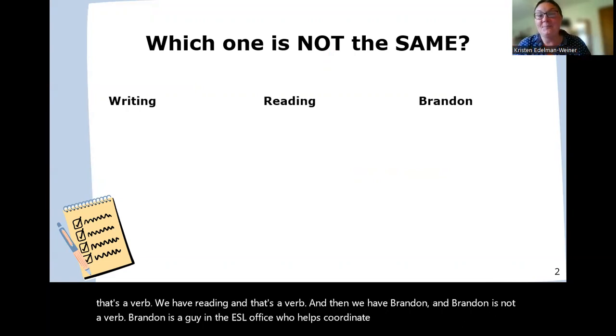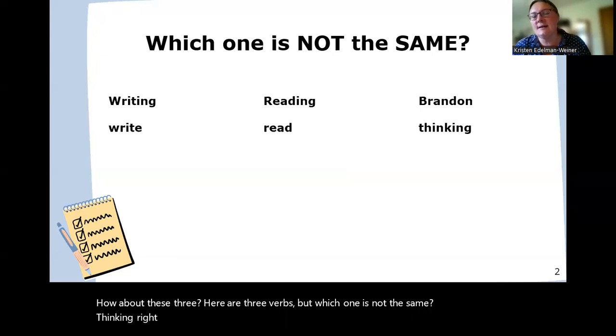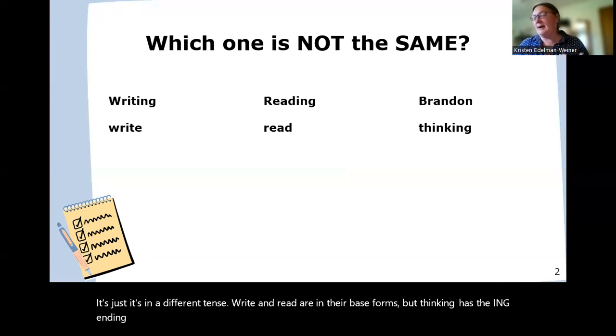How about these three? Here are three verbs, but which one is not the same? Thinking, right. Thinking is not the same. It's in a different tense, right? And reader in their base forms, but thinking has the -ing ending, indicating that perhaps we're going to use it in a progressive or continuous tense, or maybe perhaps we put this in its gerund form.